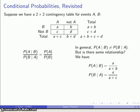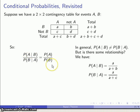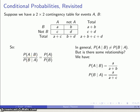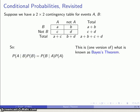Nobody really likes dealing with fractions, so we'll cross-multiply to eliminate them. That gives us: probability of A given B times probability of B equals probability of A times probability of B given A. And we have a version of what is known as Bayes' Theorem — a very beautiful relationship between the probabilities of two events, given that we know one of them has occurred.